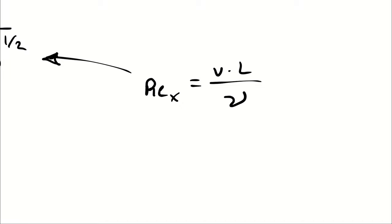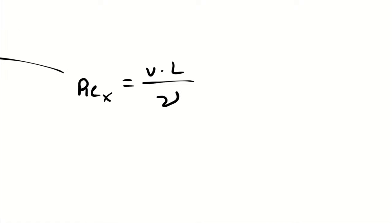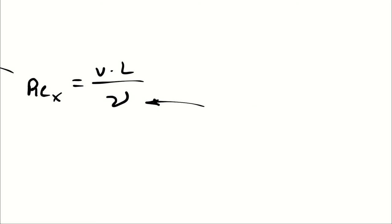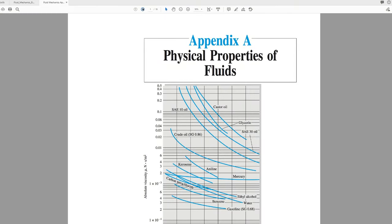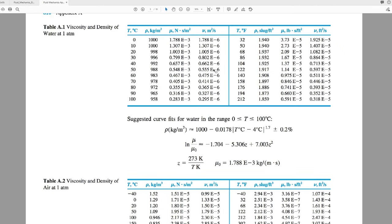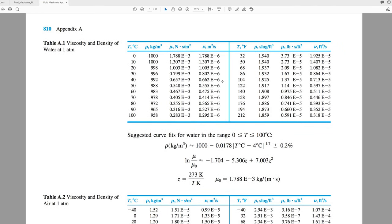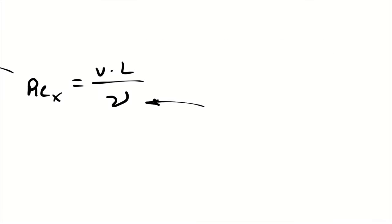Alternatively we could use the dynamic viscosity in the denominator, with density in the numerator, but since we have water at 20 degrees Celsius, it's easiest to just use the kinematic viscosity. The kinematic viscosity for water at 20 degrees Celsius comes from Table A1, where at 20 degrees Celsius the kinematic viscosity of water is 1.005 times 10 to the negative 6 meters squared per second.